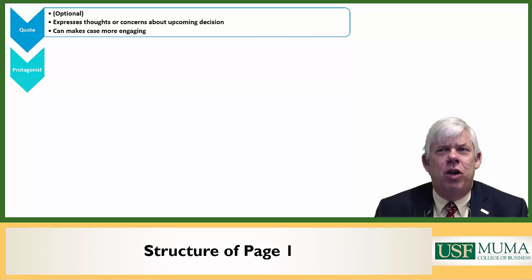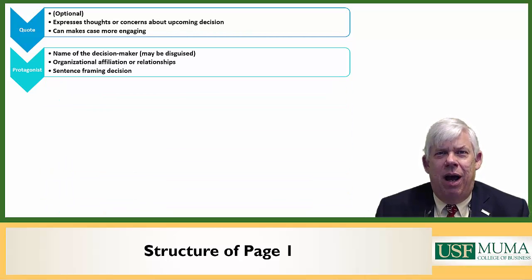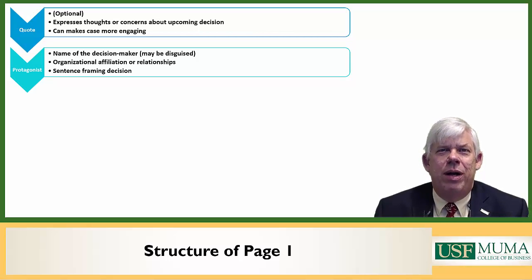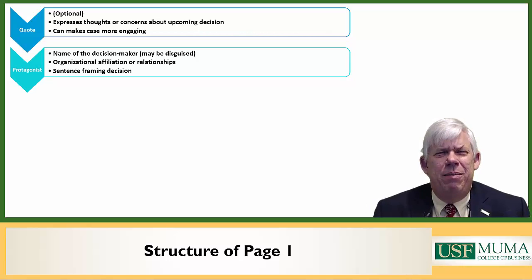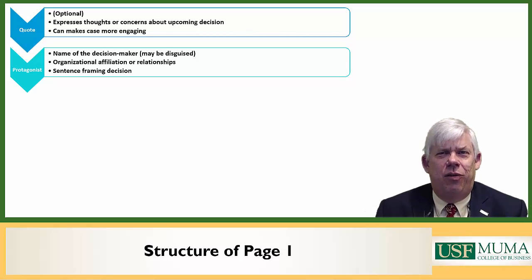The next thing you will almost always see on page one is the protagonist. We want to introduce the protagonist: give their name — which can be disguised — but make it a person we refer to throughout the case. We want to identify what organization or group the protagonist is affiliated with, and often we'll have a sentence or two that frames the decision without going into any details, just giving a sense of where that decision is going. This can often be done in a single small paragraph.